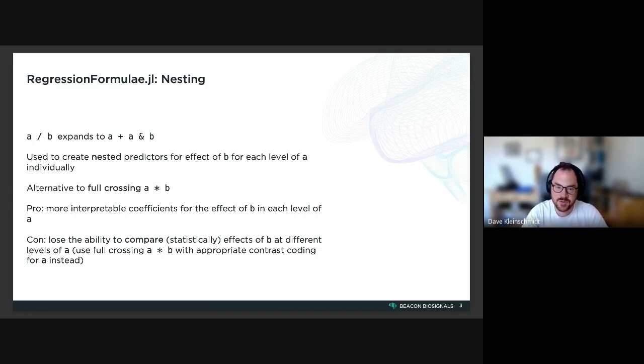And this is an alternative to a full crossing or the a * b syntax. The advantage of this syntax is that it produces more interpretable coefficients for the effect of b within each level of a. This is a common thing people want to know: what is the effect of one predictor in a bunch of different subgroups of the data that you have?